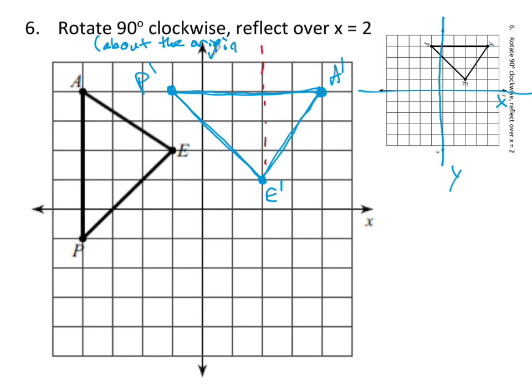Hopefully you drew your line here. Because that's where x equals 2. That's what x equals 2 is. Y equals 2 is this way. X equals 2 is this way. Remember if it's x equals the number it's a vertical line.